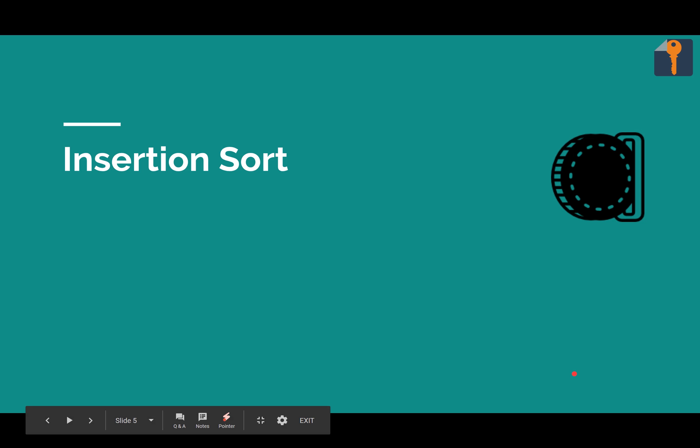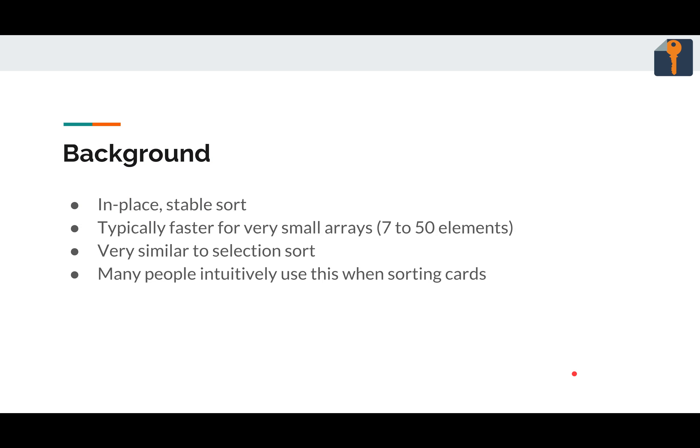Insertion sort itself. It is in place. It is a stable sort. In place means no temporary arrays, like I just said. Stable sort means if you have more than one attribute per object, like if it's not just numbers, but it's like a linked list and you're sorting on the first element, everything stays in the same order if it's equal.